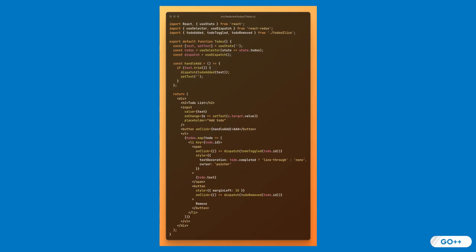This code file defines the core TodoList functionality as a React component seamlessly integrated with Redux. It uses React hooks to connect to the Redux store, handle user input, and dispatch actions for adding, toggling, and removing to-dos. The component utilizes useSelector to retrieve the TodoList from the state and useDispatch to interact with Redux actions. Mutations like toggling completion or removing items are handled with concise event handlers, while the input field supports immediate, responsive user interaction.